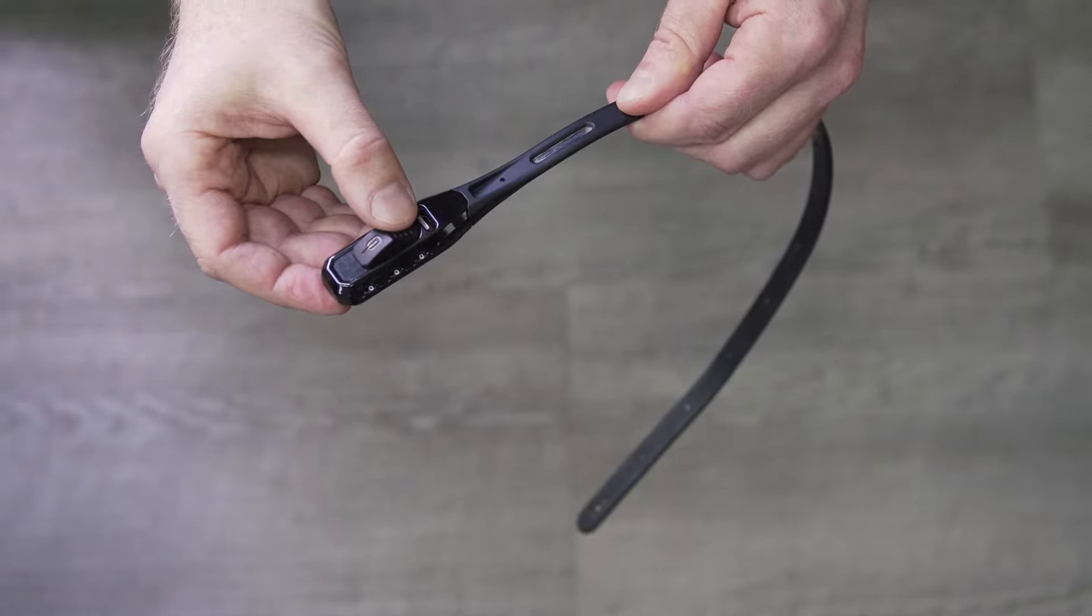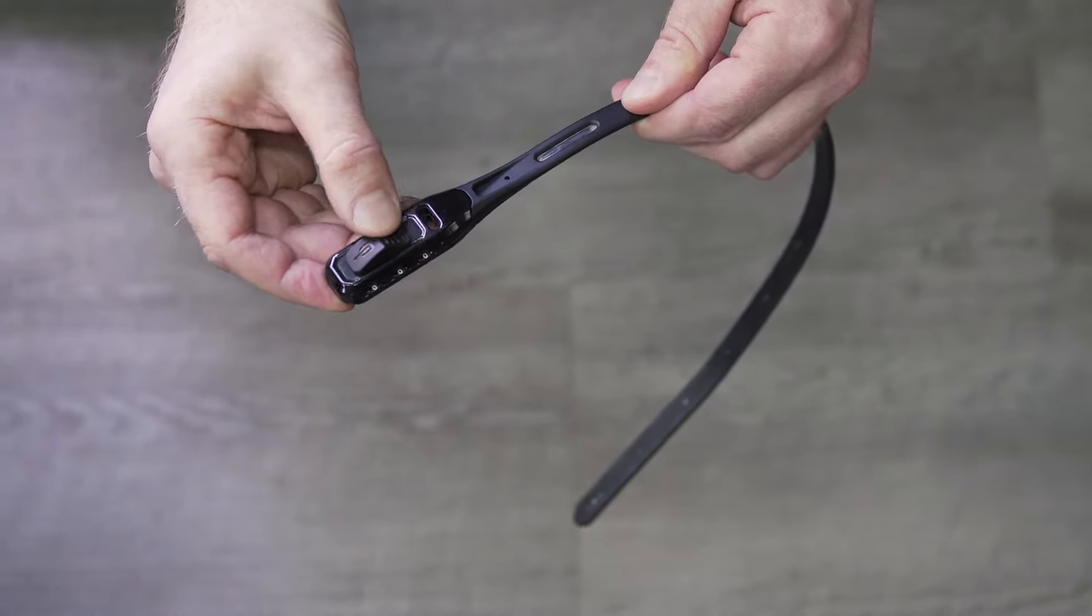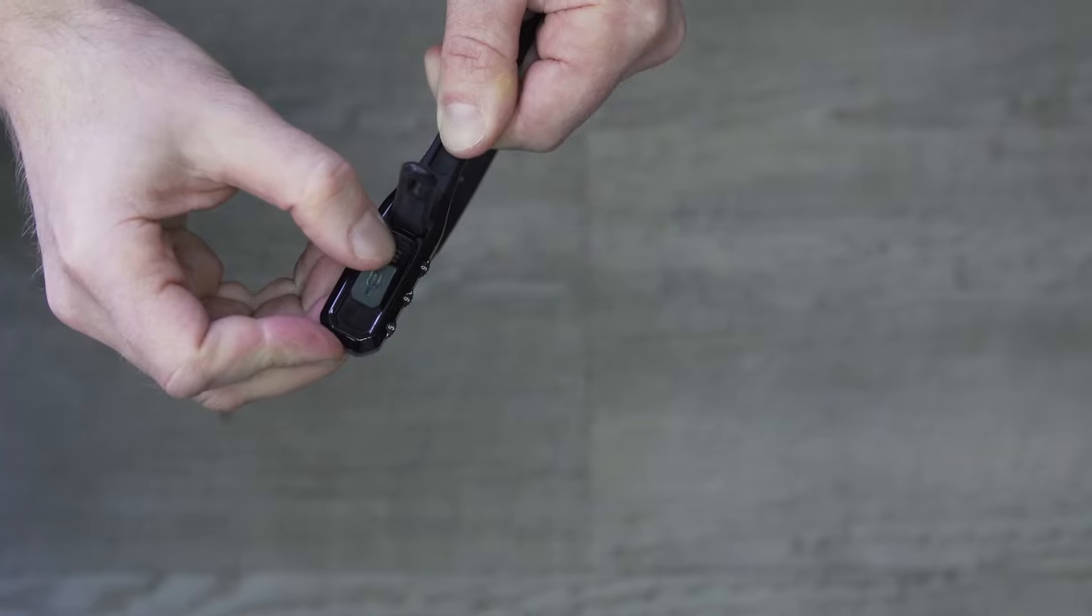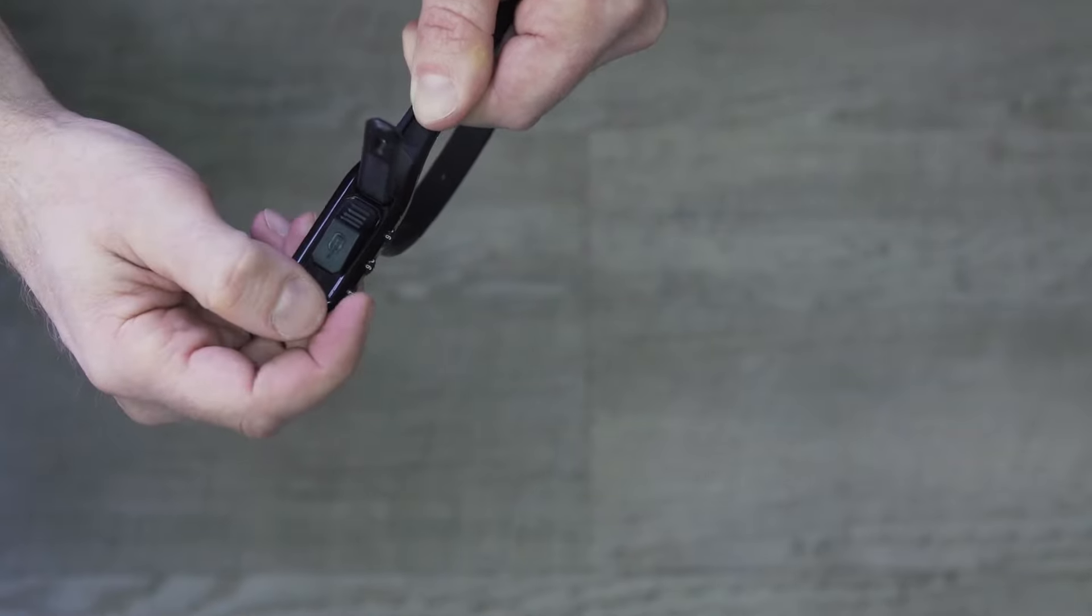Check dials are correctly aligned by sliding button across. If button does not slide, the three dials are not in the correct position.